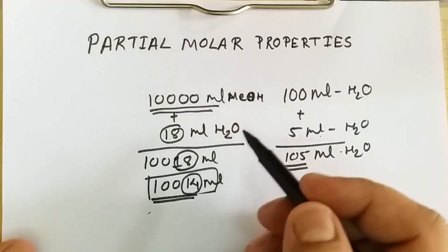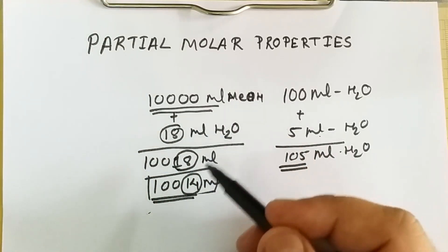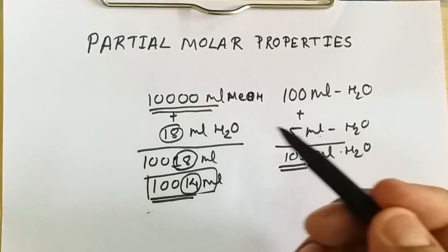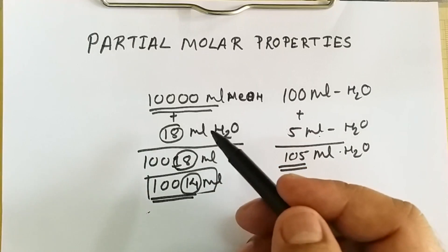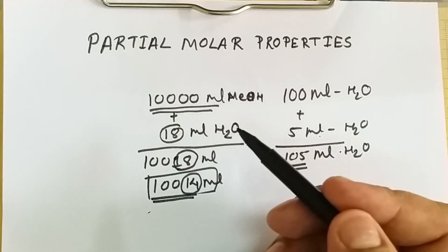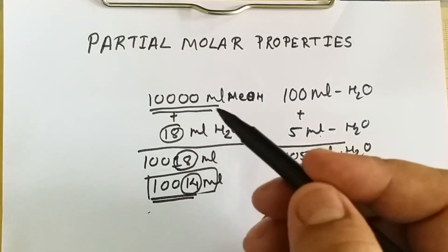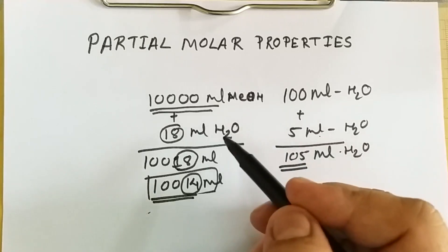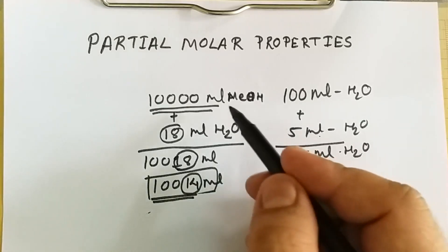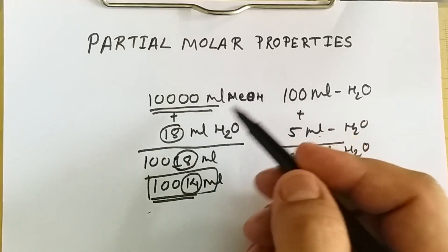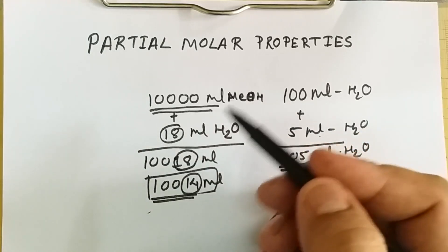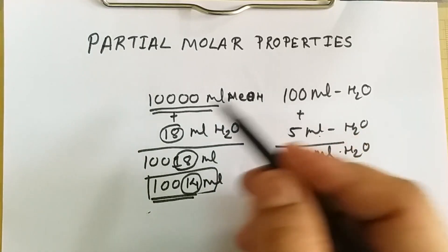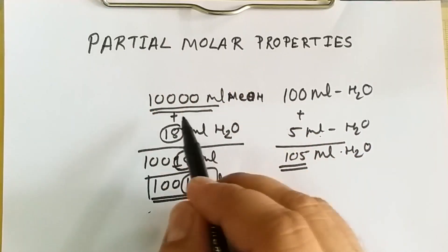You might have heard partial molar volume, but you will never hear partial molar temperature. We speak of partial pressure, but we never speak of partial molar pressure. We always hear partial molar volume, partial molar heat content, partial molar entropy, and partial molar free energy — that is chemical potential. Those properties which change with the number of moles are known as partial molar quantities. So if we are considering volume, it will be partial molar volume; heat content gives partial molar heat content; free energy gives partial molar free energy.